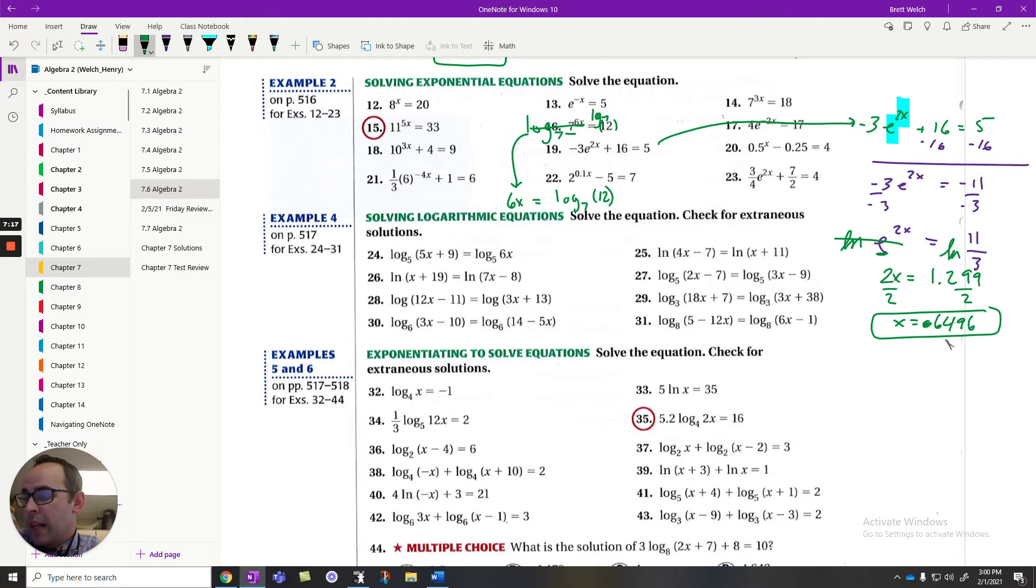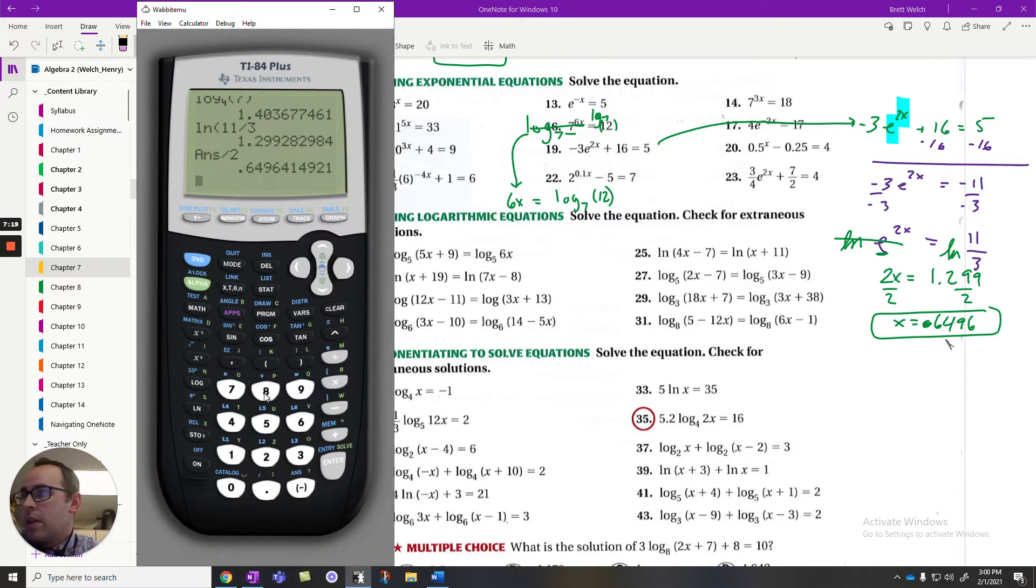Equals the log base 7 of 12. Don't forget, our calculator can do that logarithm for us. If I do, let's go math, up a couple, log base 7 of 12 is 1.277. I still have to divide by 6. So if I go ahead and divide that by 6, I get my final answer of 0.2128.